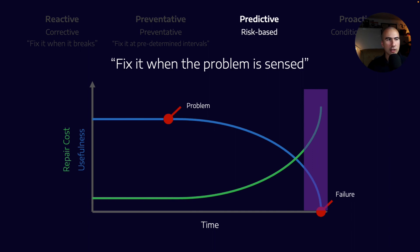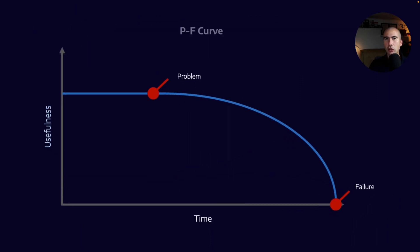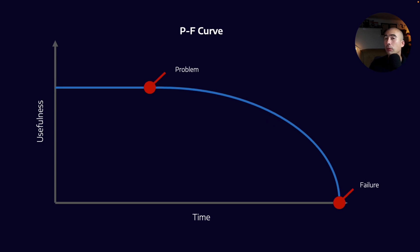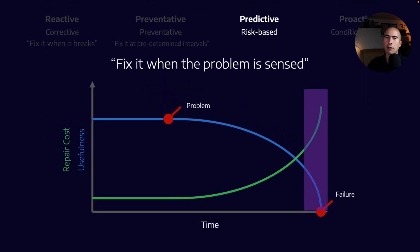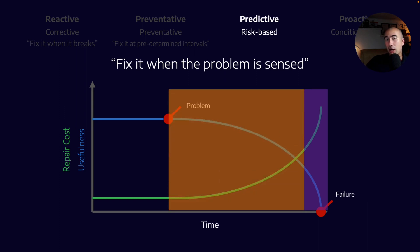Then we have predictive maintenance — we're going to fix the problem when we actually sense it. On the P to F curve, after a problem P occurs, we have multiple opportunities to identify what that problem is before failure actually occurs. In condition monitoring, we might sense changes in vibration through vibration analysis, observe debris in the oil through oil analysis, detect a change in the infrared signature, hear noise as in cavitation or microdieseling, or eventually the item becomes hot to the touch. We are operating in the time between P and F, trying to catch that failure before it happens.